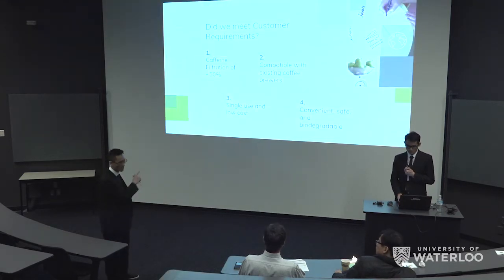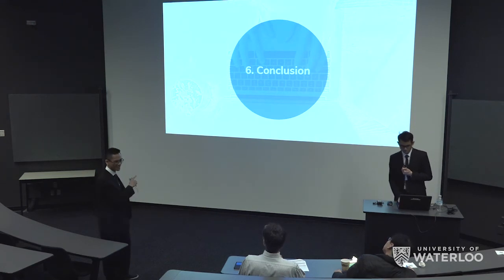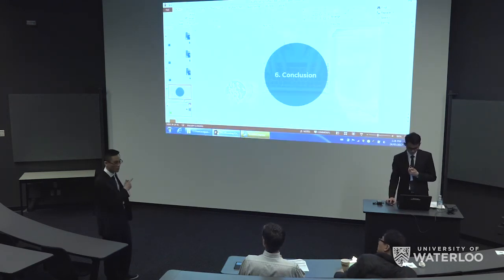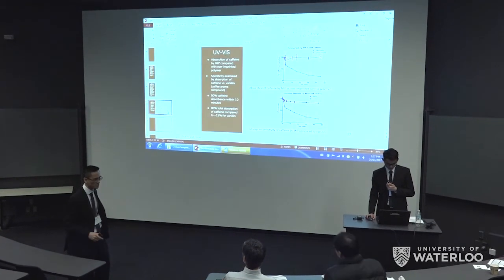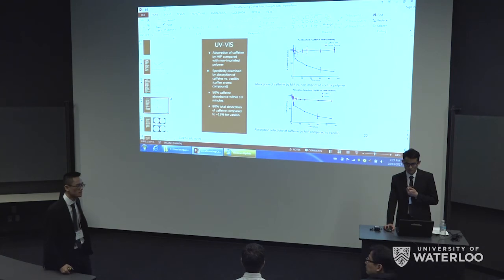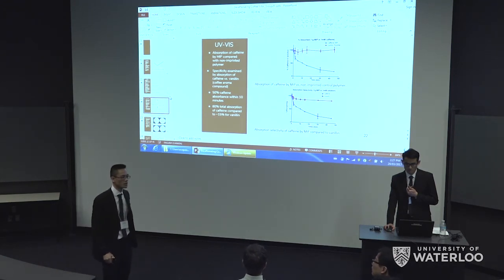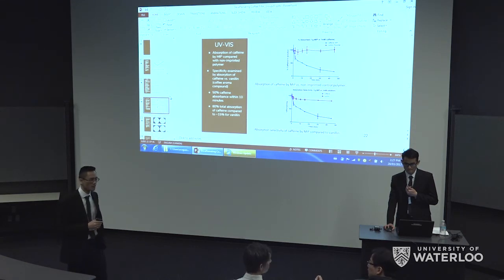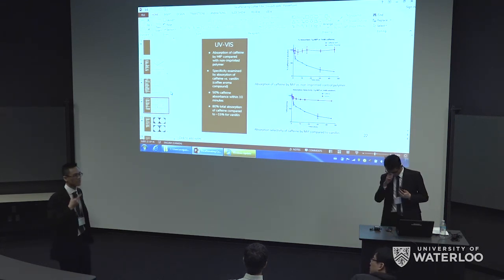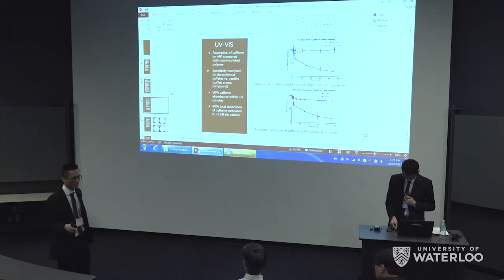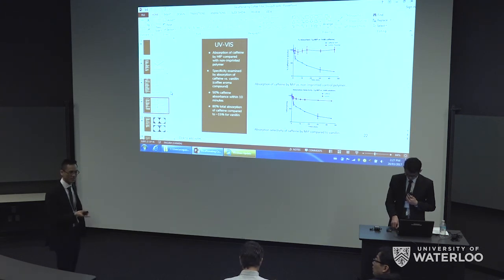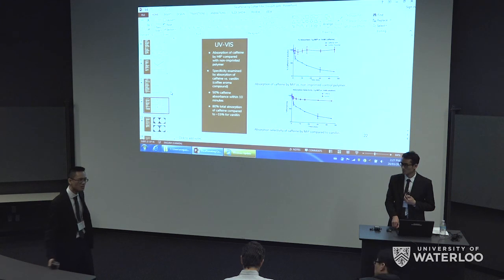Q: Why is the binding specific? A: The pocket interacts both sterically and electrostatically with caffeine. We demonstrated specificity using vanillin as a control, showing it doesn't bind vanillin. We were also thinking of using adenosine as a control — caffeine binds to adenosine receptors in the brain, and adenosine looks very similar to caffeine, just missing the three methyl groups. However, we didn't have adenosine available and it's very expensive because it's used for PCR, whereas caffeine is much cheaper — about half a kilo for $30.